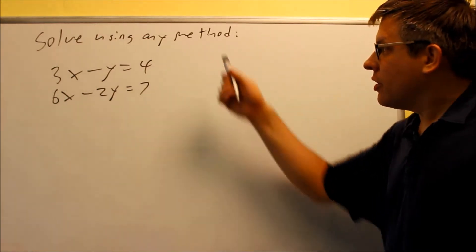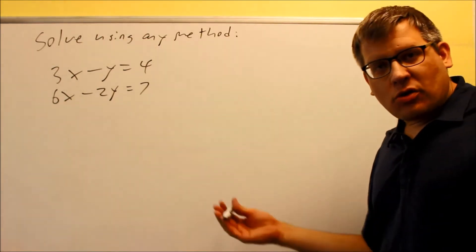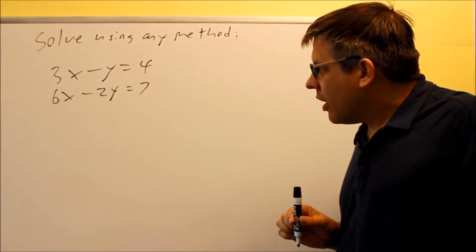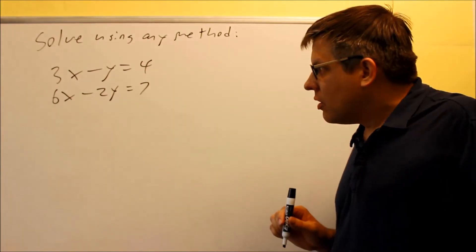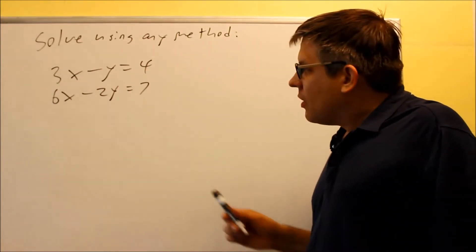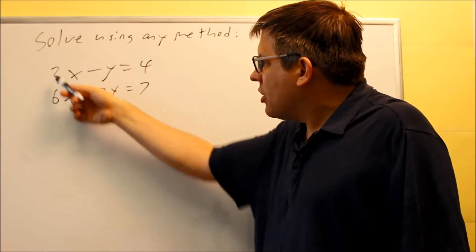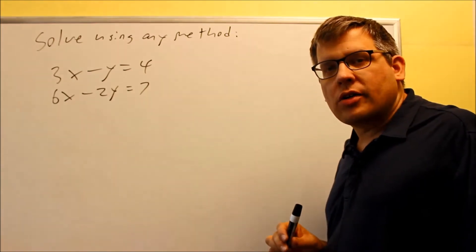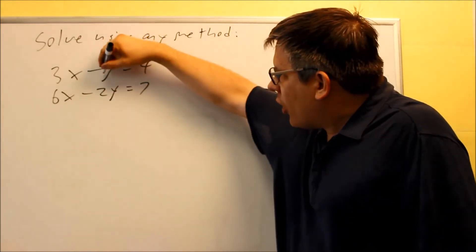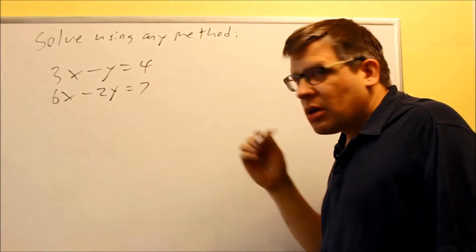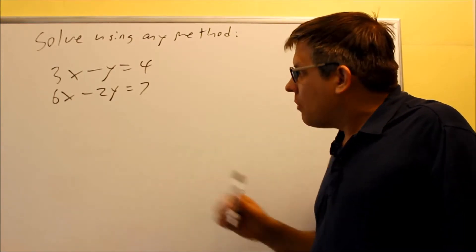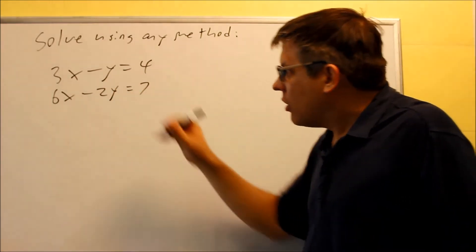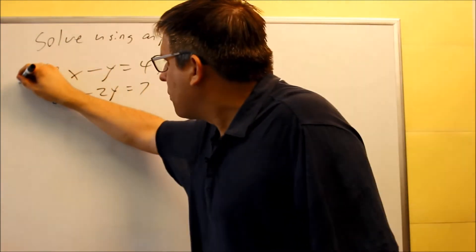This next problem is another linear one and we can solve it using any method — either substitution or elimination. I'm going to use elimination. Looking at the y coefficients, I have negative 1 and negative 2. Since the least common multiple is 2, I want one to be positive 2y and one to be negative 2y so they cancel. I already have negative 2 in the second equation, so I only need to multiply the first equation by negative 2.